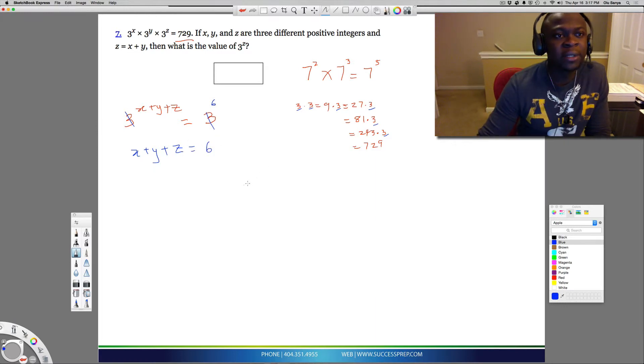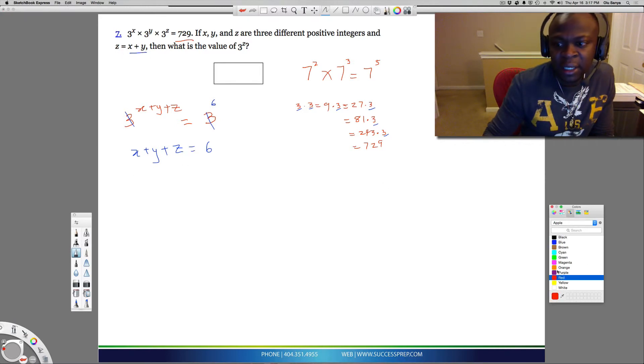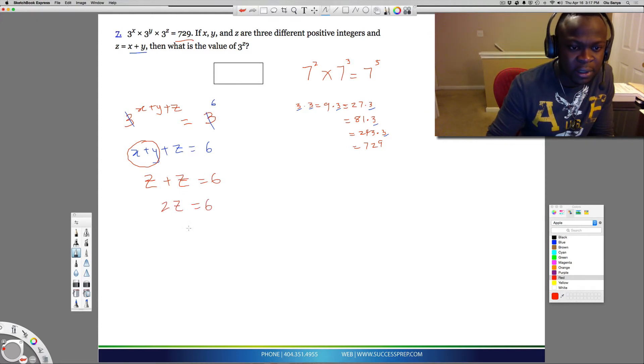Well, one of the things we know now is that from the question is that the z is equal to x plus y. So anytime we see x plus y, you could just substitute that. So instead of writing this x plus y, you should just write z. Plus z equal to 6. Obviously, z plus z is 2z. Equal to 6. Divide by 2. So z is 3.